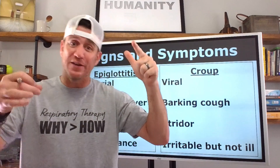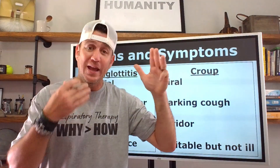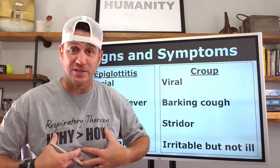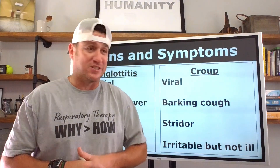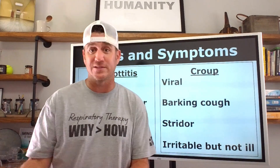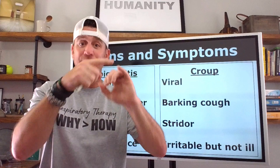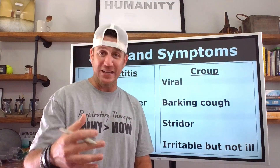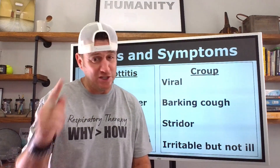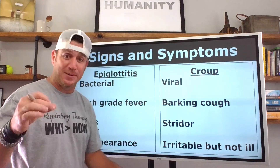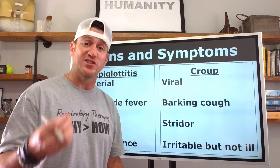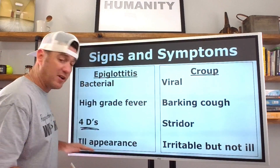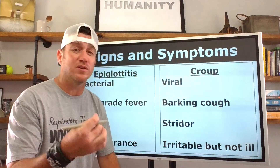Dysphagia leading to drooling — that's the third D. The fourth D is distress: the upper airway obstruction can lead to respiratory distress, meaning retractions, nasal flaring, tachypnea, and tachycardia. So the four D's are: dysphonia, dysphagia, drooling, and distress. If you see any combination of those — especially the drooling — on a TMC, CSE, or program exam question, that's a strong indication you're dealing with epiglottitis. These patients will also appear very, very ill and sickly.